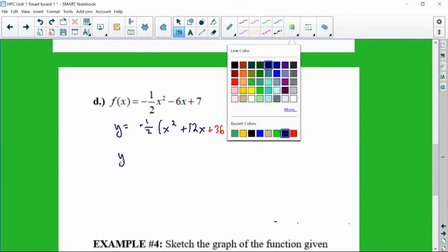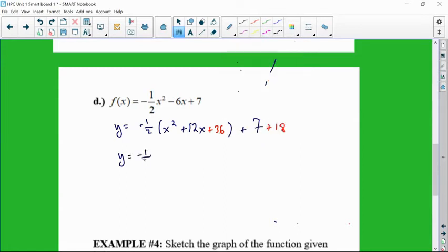And then we group this negative 1 half. And that's x plus 6 squared. And then 7 plus 18 is plus 25. So now our vertex, had we needed to label it, is negative 6 comma 25. And again, this coefficient in front of negative 1 half tells me my parabola is opening down, and it's increasing at a rate half of what the normal increase is, making it a wider parabola or vertically compressed, horizontally stretched.